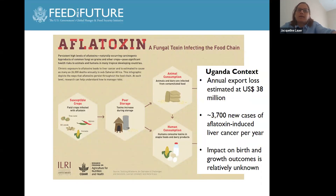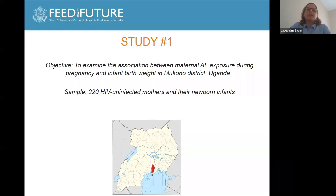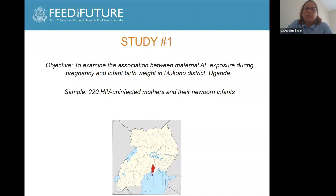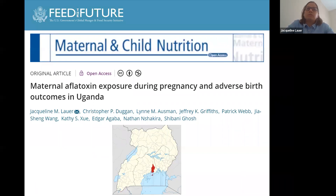In Uganda, aflatoxin contamination is estimated to cause approximately 3,700 new cases of aflatoxin-induced liver cancer per year. However, its impact on birth outcomes and on stunting is a bit less clear. We designed two different studies to look at maternal aflatoxin exposure and pregnancy outcomes in Uganda. The first was a prospective study of HIV-uninfected pregnant women in Mukono, Uganda — a large peri-urban district in the central region, located about 20 kilometers outside of the capital city of Kampala.